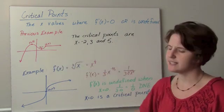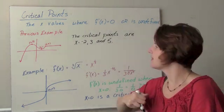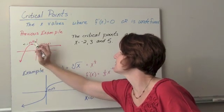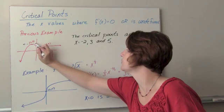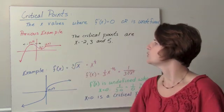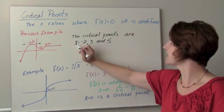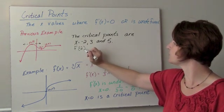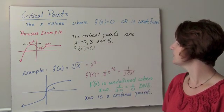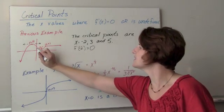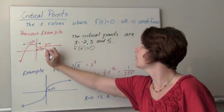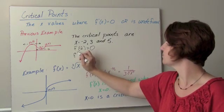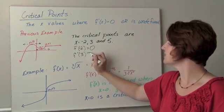In our previous example, notice that the tangent line when x equals negative 2 was 0, so I'd say f prime at negative 2 equals 0. Also, the tangent line when x equals 3 was 0, so f prime at 3 is 0.